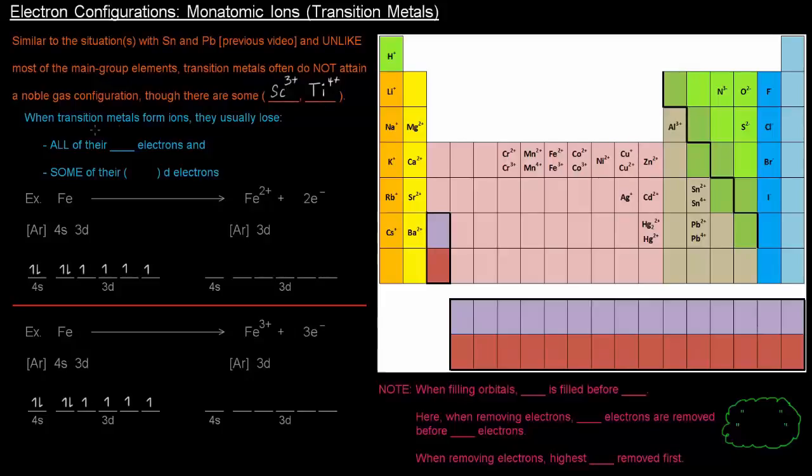When transition metals form ions, they usually lose all of their n electrons and some of their n-1 d electrons, where n is just the highest energy level in question.